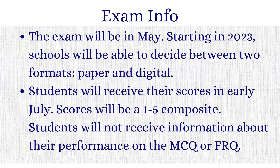Now let's go over some exam basics. The exam is in May. Starting in 2023, schools can decide whether they want a paper test or a digital test. Students receive their scores in early July as a number between one and five — this is called your composite score. In general, students aim for a three, four, or five on AP exams. Unfortunately, when you receive your scores you won't get information about how you did on the multiple choice or the essays individually — all you get is that one composite score number.